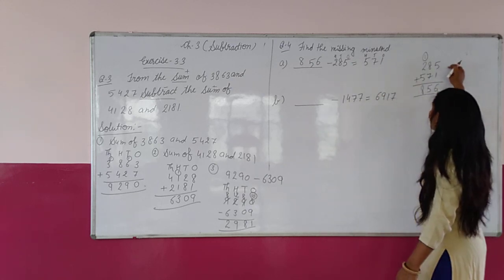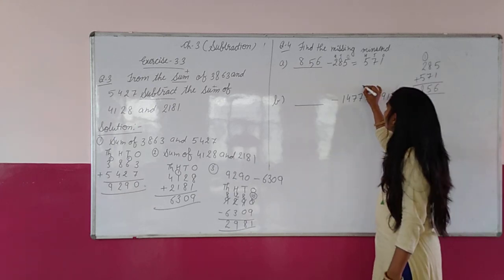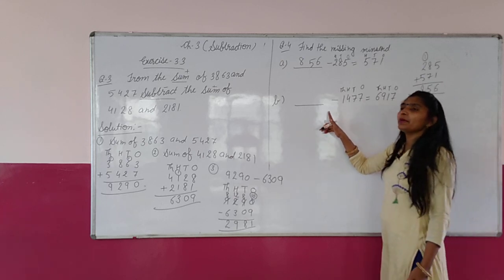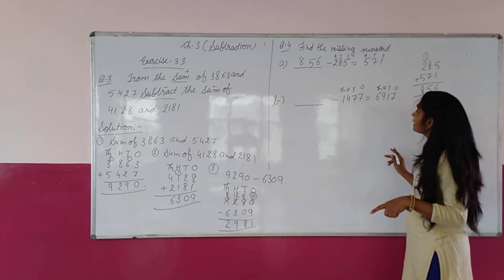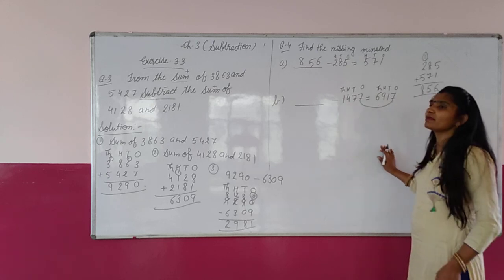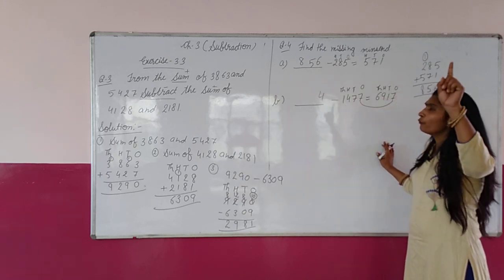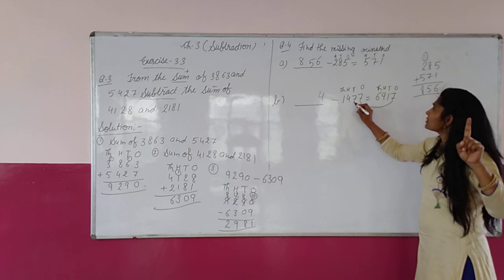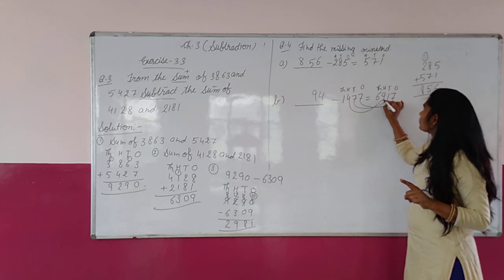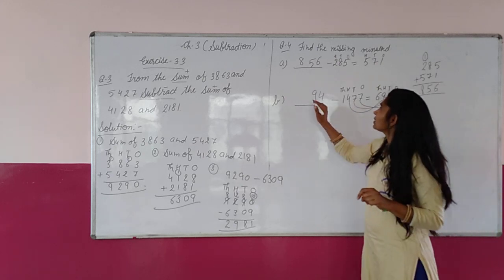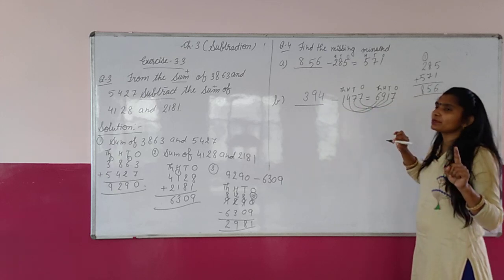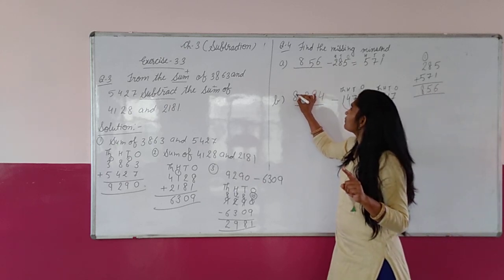Now second part, we will do it direct — columns में arrange करके. Ones, tens, hundred, thousand. Minuend निकालने के लिए: subtrahend plus difference. 7 plus 7 = 14, write 4, carry 1. 7 plus 1 = 8, and 1 carry = 9. 9 plus 4 = 13, write 3, carry 1. 6 plus 1 = 7, and 1 carry = 8. Answer: 8,394.